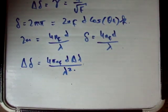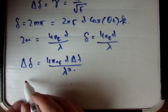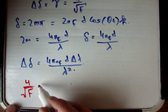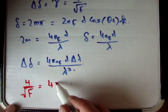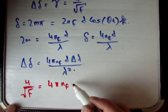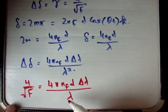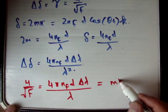So if we equate those terms, we're going to find the following. I'm going to find that 4 over the square root of the finesse is equal to 4 pi n sub f d times delta lambda over lambda. That's going to be equal to m times n.